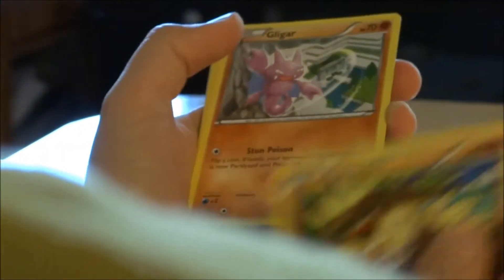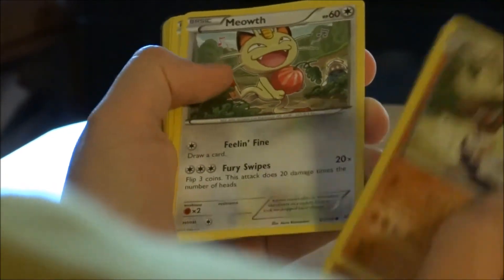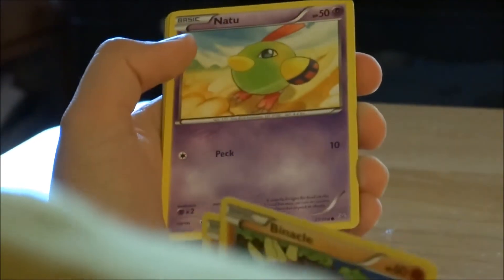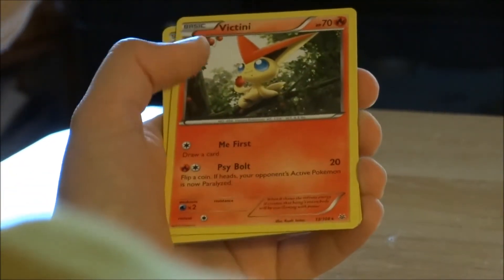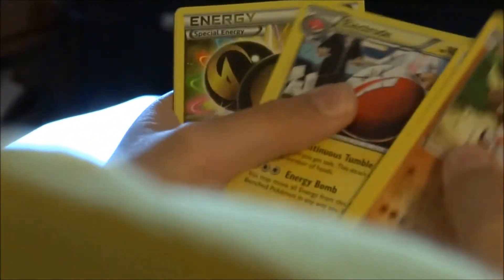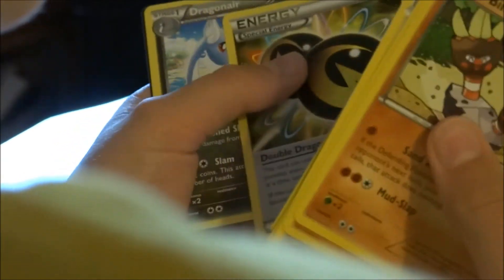Oh great. This last pack better come with some luck. We need another Ultra Rare. Binacle, Gligar, Natu, Fearow, Natu, Reverse Rare Deoxys, Victini, Blastoise, another Double Dragon Energy.